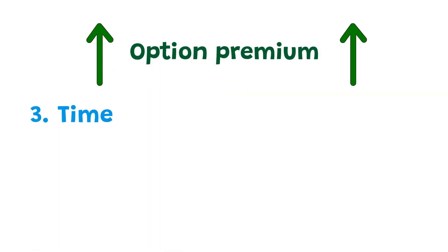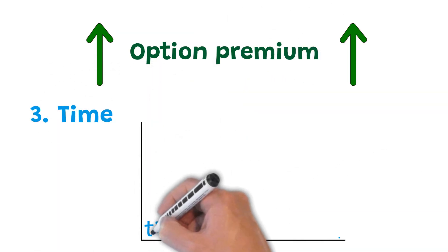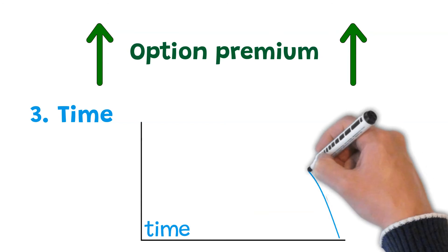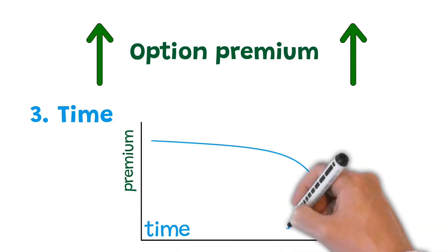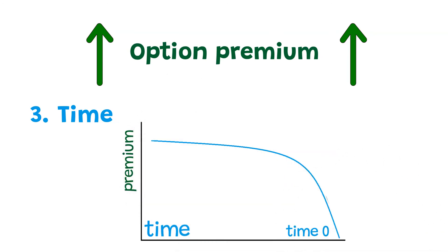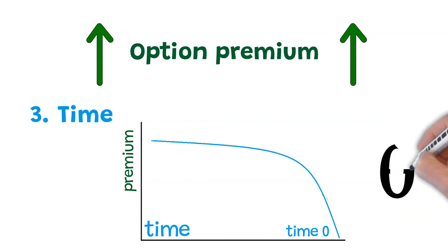Third factor: time. The more time to expiration, the higher the premium. Far from the expiration, the time value component decreases very slowly. However, closer to expiration, it decreases at a faster pace. Another Greek, Theta, gives us the exact number of cents the option premium changes per day.